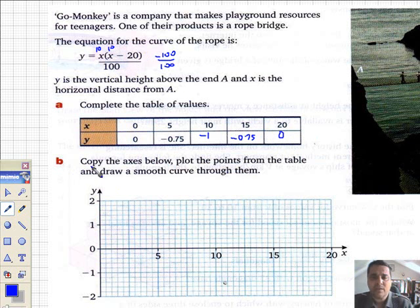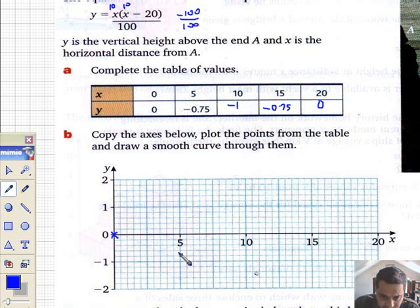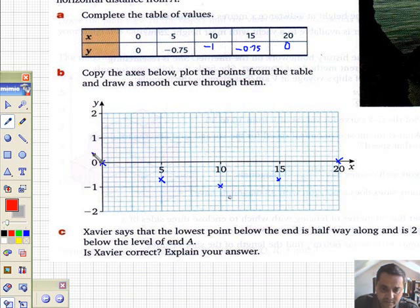Copy the axes below and plot the points from the table and draw a smooth curve. The point 0, 0 is there. 5 minus 0.75 is, let's try and do this. 0.75 is going to be roughly here. And when we're 10 meters away from A or B, we're going to sag minus 1 meter. 15 is going to be about there. Minus 0.75 and 20 is 0.